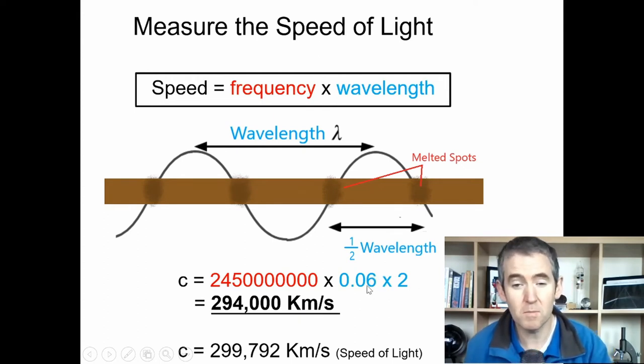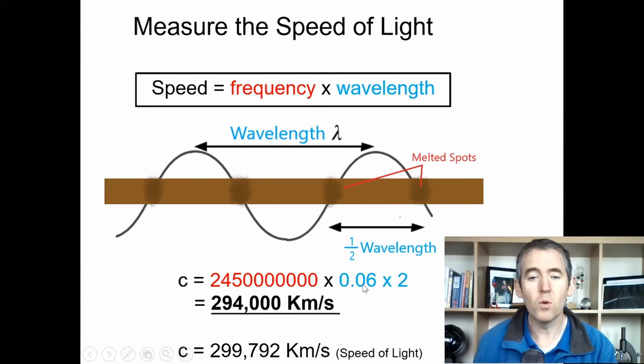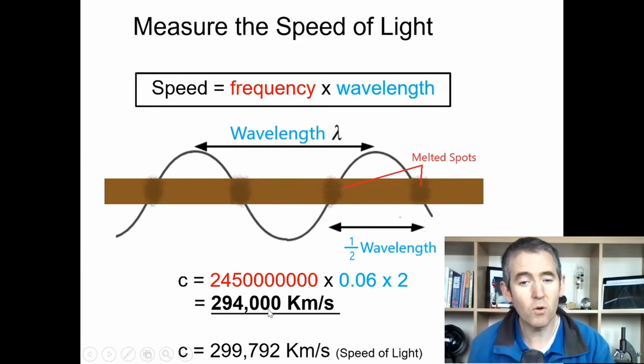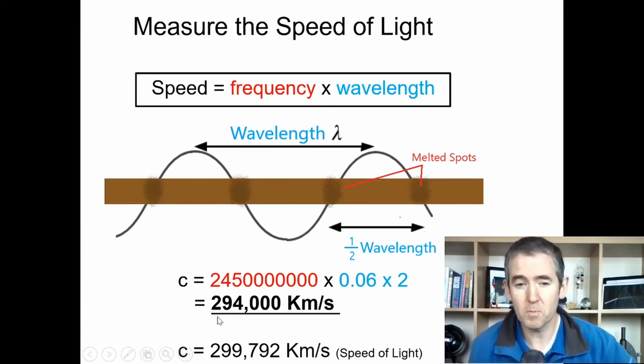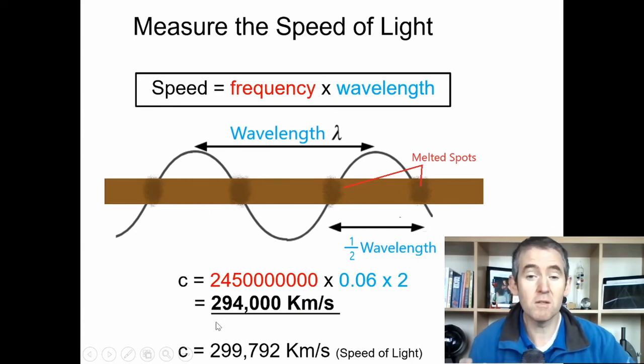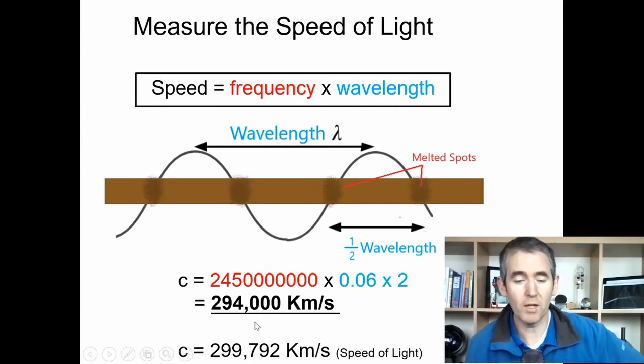So you multiply it by 2 to get the full wavelength. The actual full wavelength is 12 centimeters or 0.12 meters. If you multiply that out, you get 294,000 kilometers per second, which is very close to the actual speed of light. The actual speed of light is 299,792 kilometers per second. If you could measure the distance between the melted spots even more accurately, you could get an even closer figure.